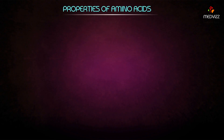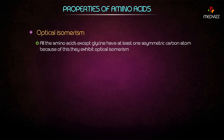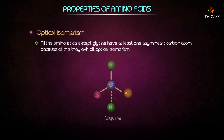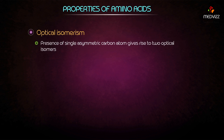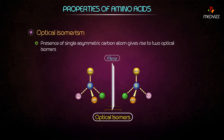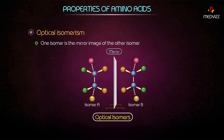Properties of amino acids — optical isomerism: All amino acids except glycine have at least one asymmetric carbon atom, and because of this they exhibit optical isomerism. The presence of a single asymmetric carbon atom gives rise to two optical isomers.